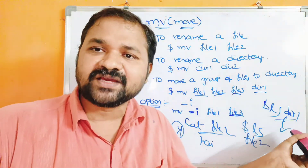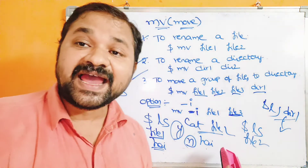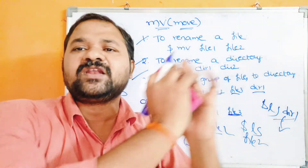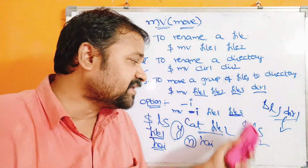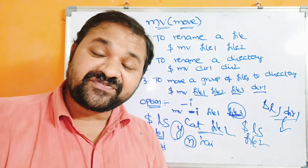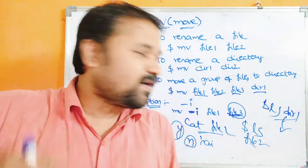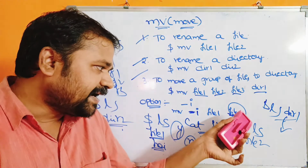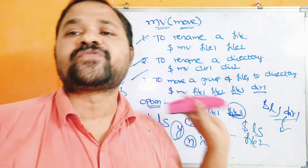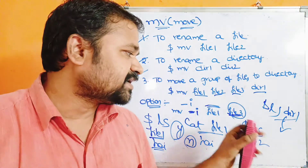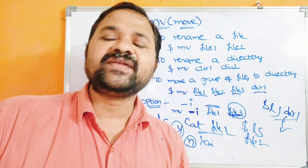If you press y, the contents of file1 will be moved to file3 — file3 will now contain file1's contents. If you press any other key such as n, no moving will be done; file1 and file3 contents remain as they are. If you press y, file3's existing content is overwritten with file1's content, and file1 will no longer be available. Running ls will show only file3. This concludes the move command; in the next video we will see the remove command.